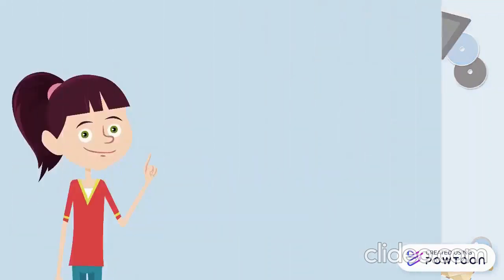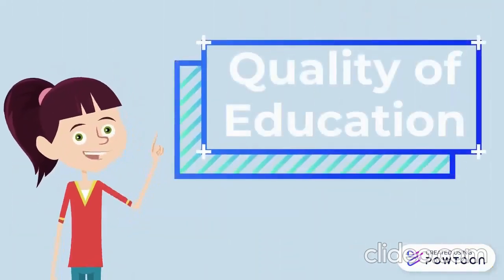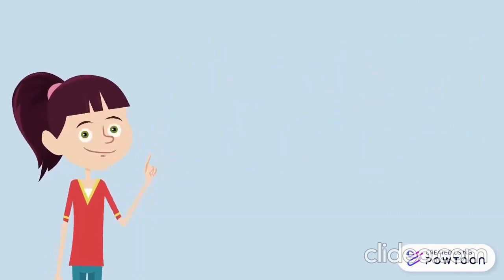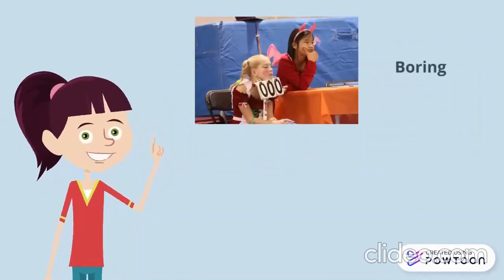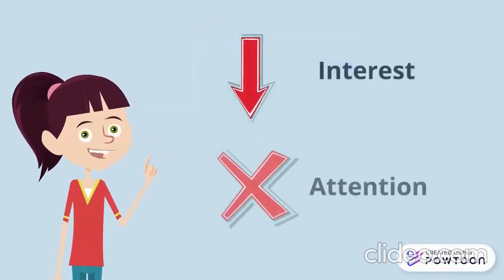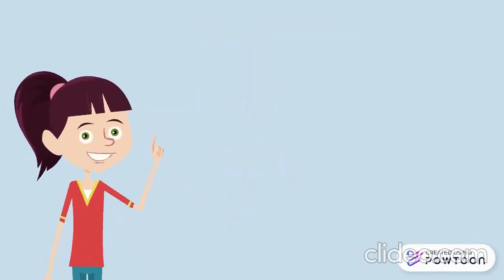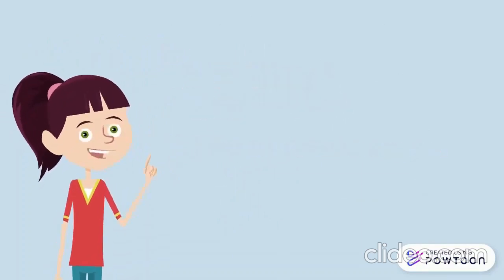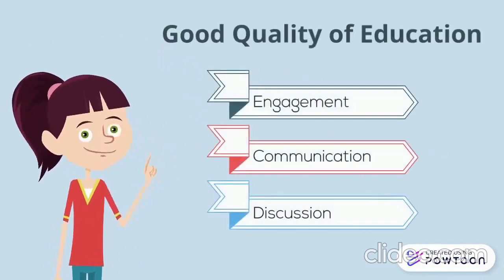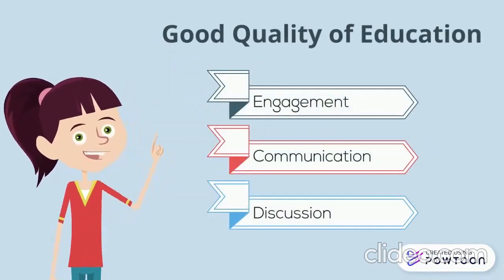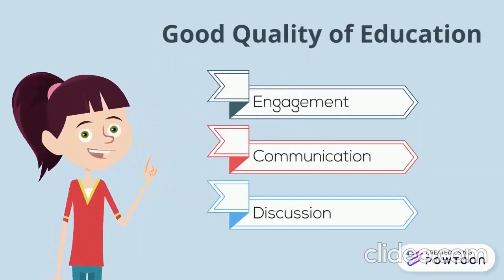The first online learning issue is quality of education. Research found that some learners find online learning boring and unengaging, which decreases their interest and causes them not to pay attention during online class. Due to this, the quality of education cannot be ensured, as engagement, communication, and discussion are important elements in developing quality education.